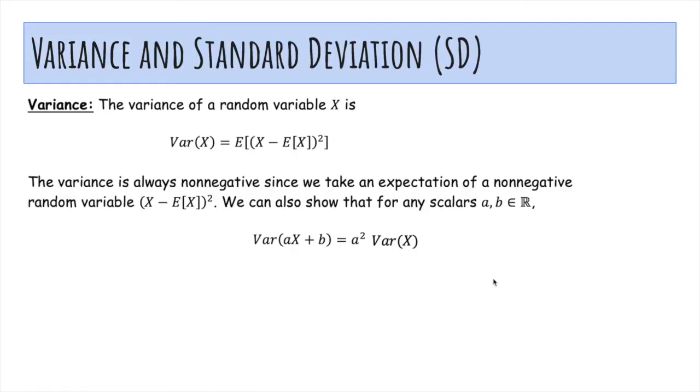The variance is always non-negative since we're taking an expectation of something that's always non-negative. And we can also show for any scalars a and b, the variance of ax plus b turns out to be just a squared times the variance of x. And actually you can do some algebra to show this formula is equal to this formula. And this one is actually more useful when we do computations.